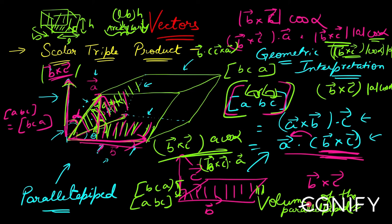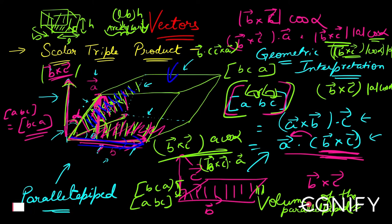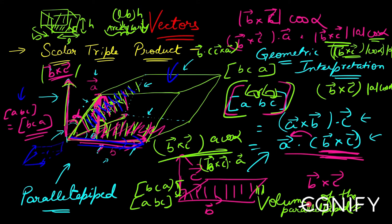In box(a, b, c) you take the bottom face as the base and a as the height. In box(b, c, a) you take the side face as the base area and b as the height. But ultimately base area times height gives the volume of the same parallelepiped — that's why they are equal. The key point is: the scalar triple product of three vectors a, b, c gives the volume of the parallelepiped formed using those three vectors as edges. With this, let's move on to the properties of scalar triple product.